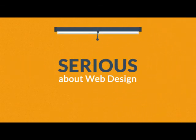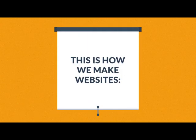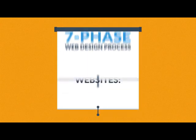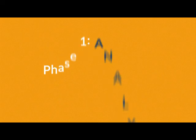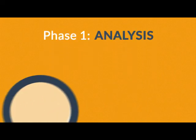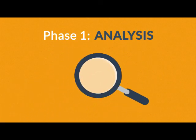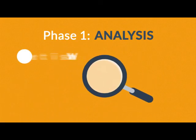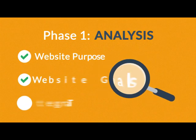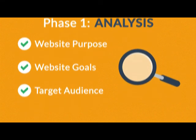That's where we come in. This is how we make websites, by following a seven-phase web design process. Phase one: analysis. The first step is always about information gathering — identifying things like the website purpose, goals, and target audience.